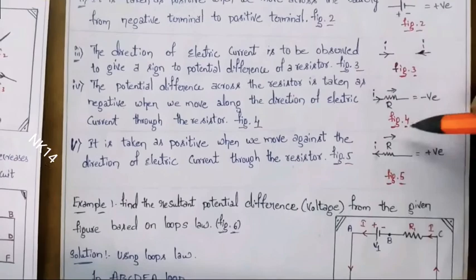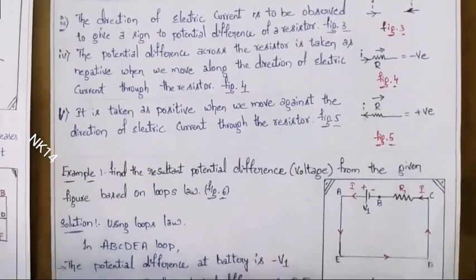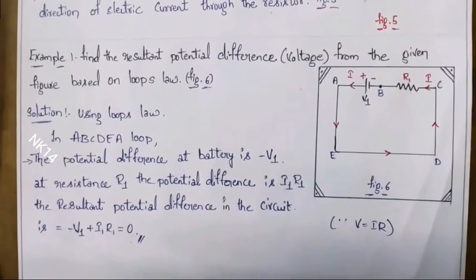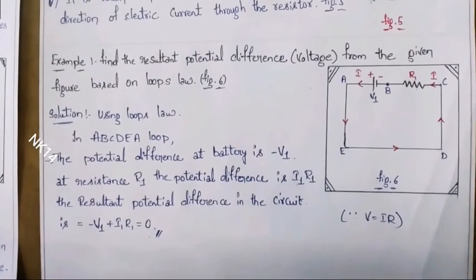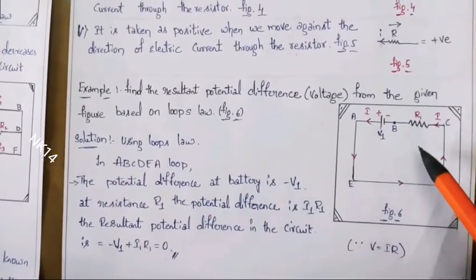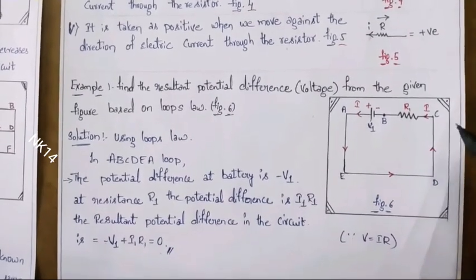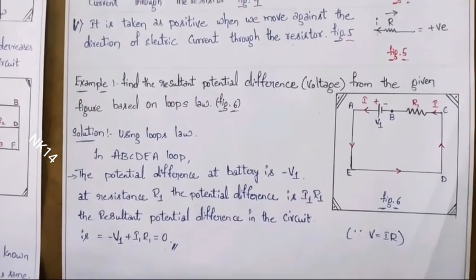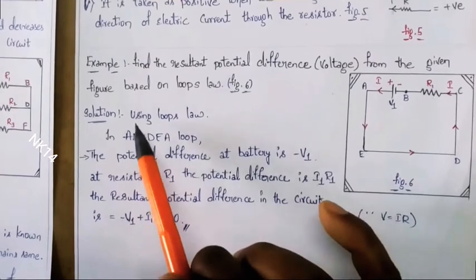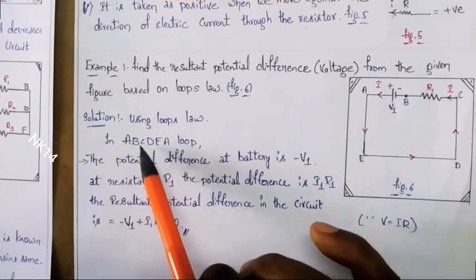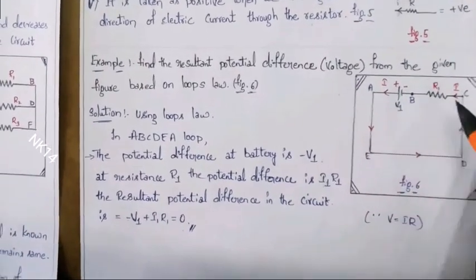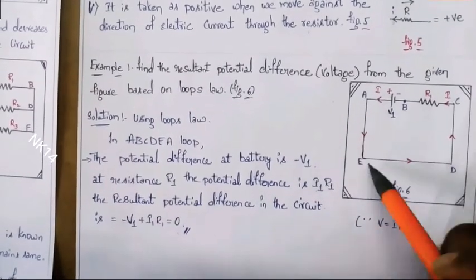For all these points, I have taken one simple example for easy understanding. The example: find the resultant potential difference from a given figure based on the loop's law. For the given one loop, we have to find the potential difference. According to loop's law, the result should be zero. We will apply the loop's law along loop ABCDEA. This is the identification of the loop — it is a closed circuit with one voltage source, one resistor, and a current direction.